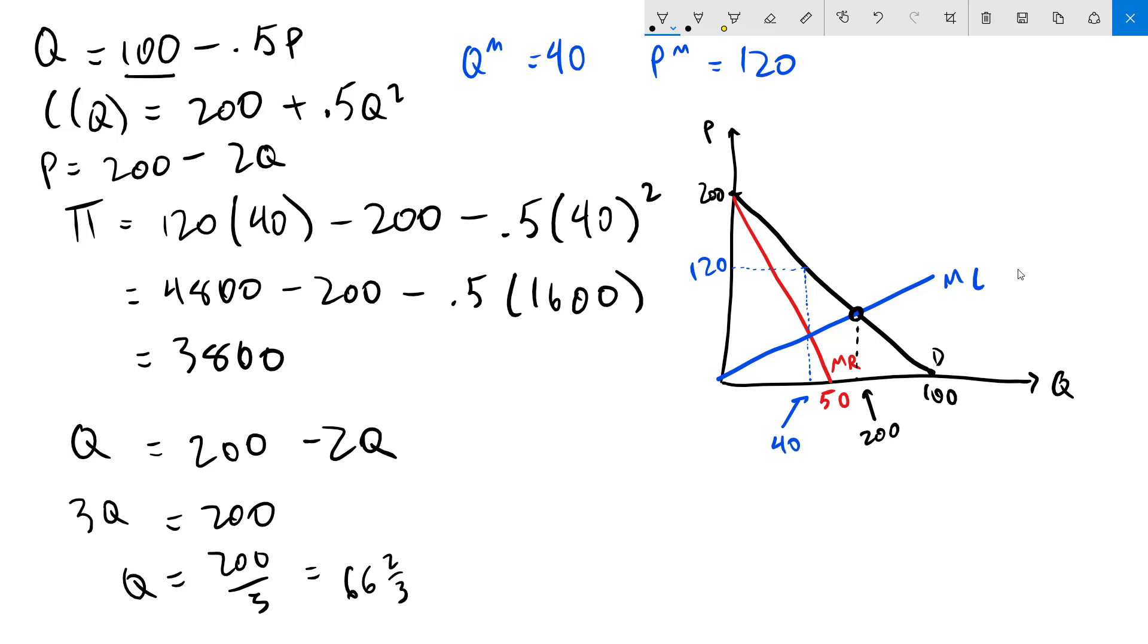I'll write that in here. While 200 thirds is the socially optimal quantity, the quantity that actually happens due to the monopoly is 40. The monopoly is only interested in its own profit not in the socially optimal outcome so they're going to produce too little. The additional social welfare that society can gain by moving from the monopoly outcome to the socially optimal outcome is given by this triangle right here.